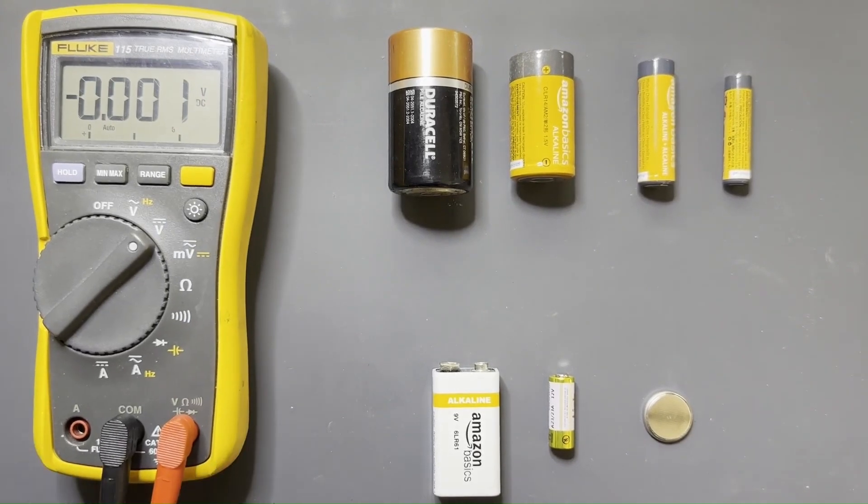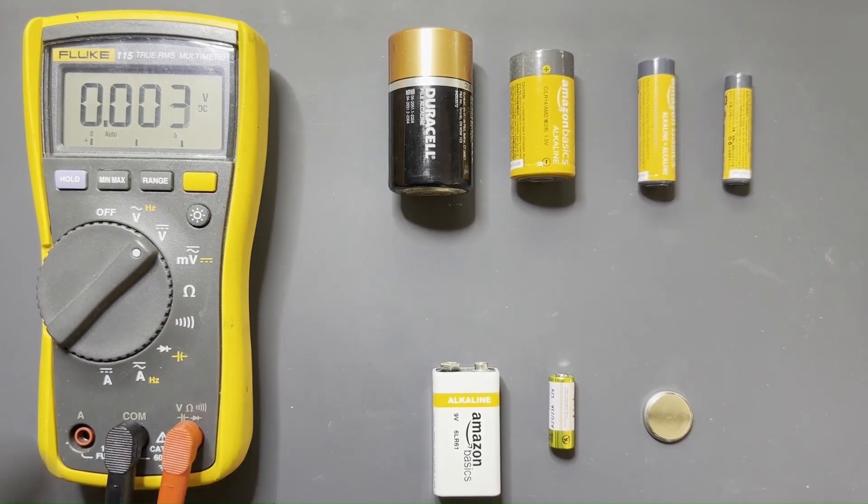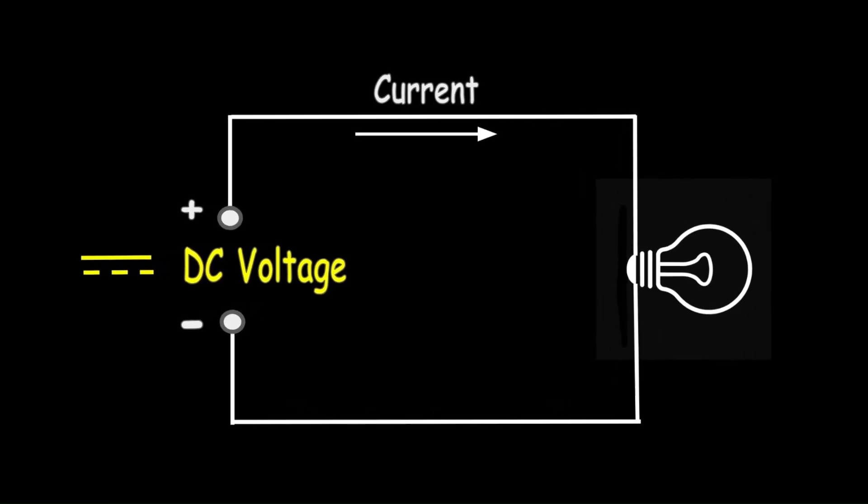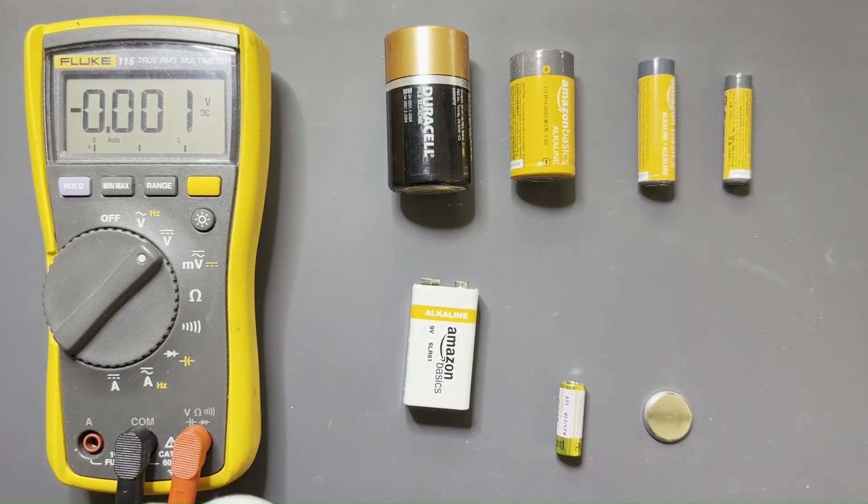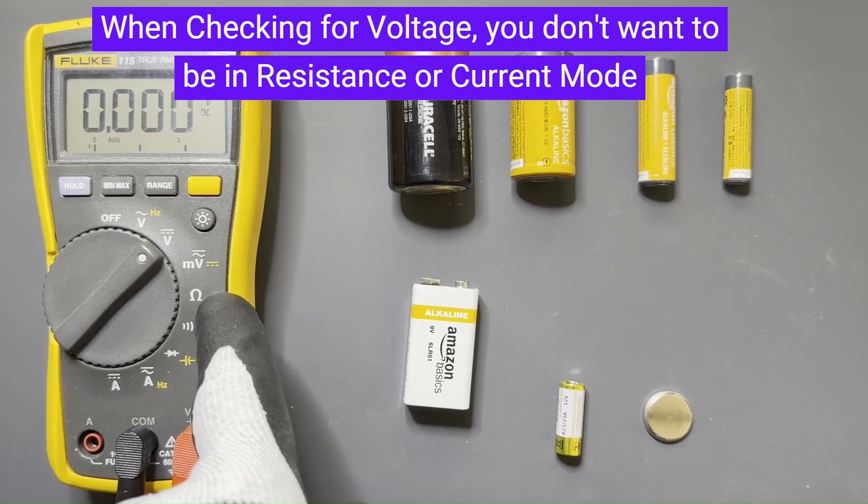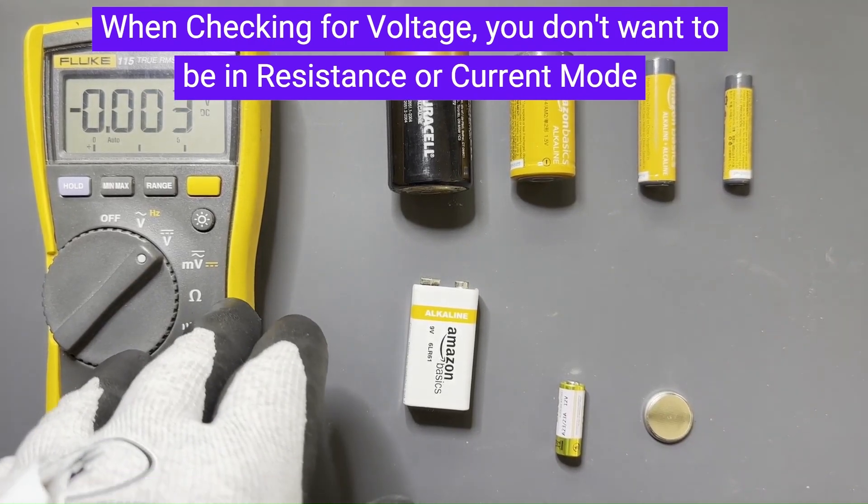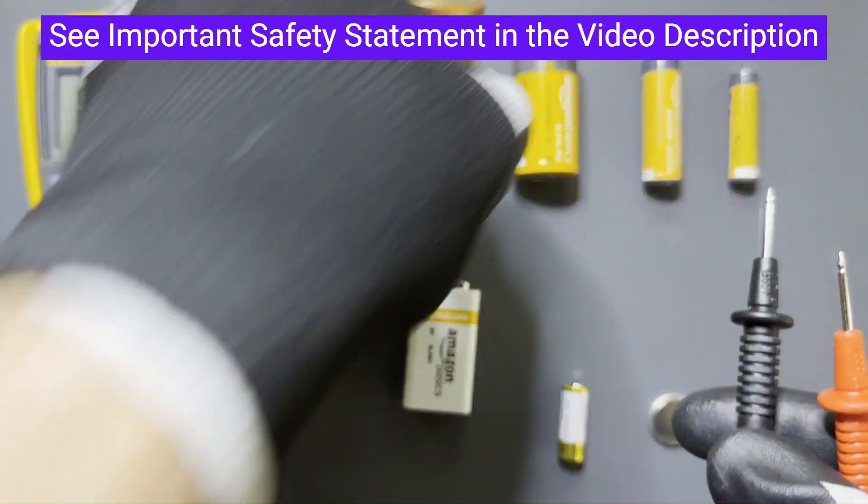So we're checking DC voltage. DC voltage is voltage that doesn't oscillate like AC - it causes current to flow in only one direction. Whenever you're checking batteries, you definitely don't want to be in resistance mode or current mode because you can damage the meter if you do that.